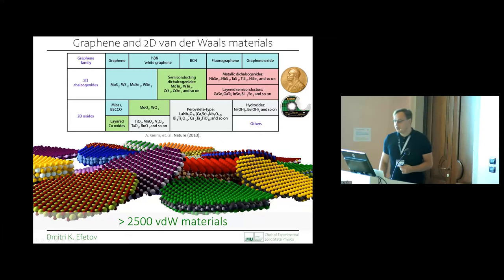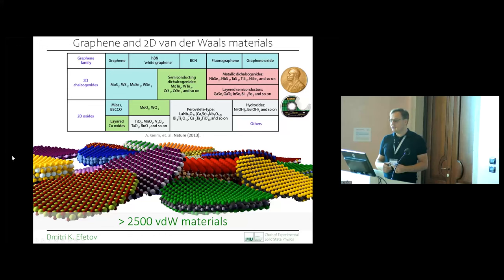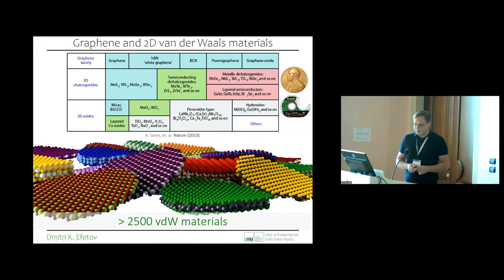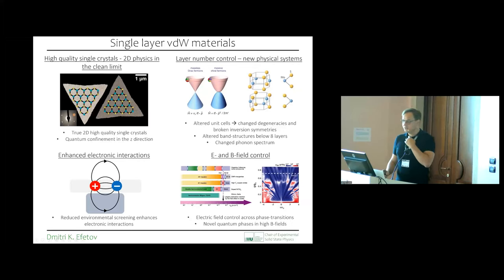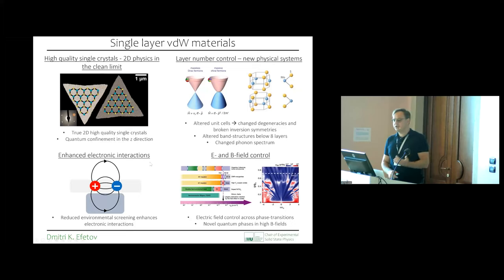This opens up entirely new possibilities to study all the different families of materials — superconductors, magnets, semiconductors — in the two-dimensional limit. Studying materials in the two-dimensional limit is an interesting direction by itself, contrasting our systems, for example, with grown heterostructures. Our crystals are usually true single crystals — this is a typical image of MoS₂, a semiconductor material. When we prepare these materials, they're already single crystals with extremely high crystallographic quality.